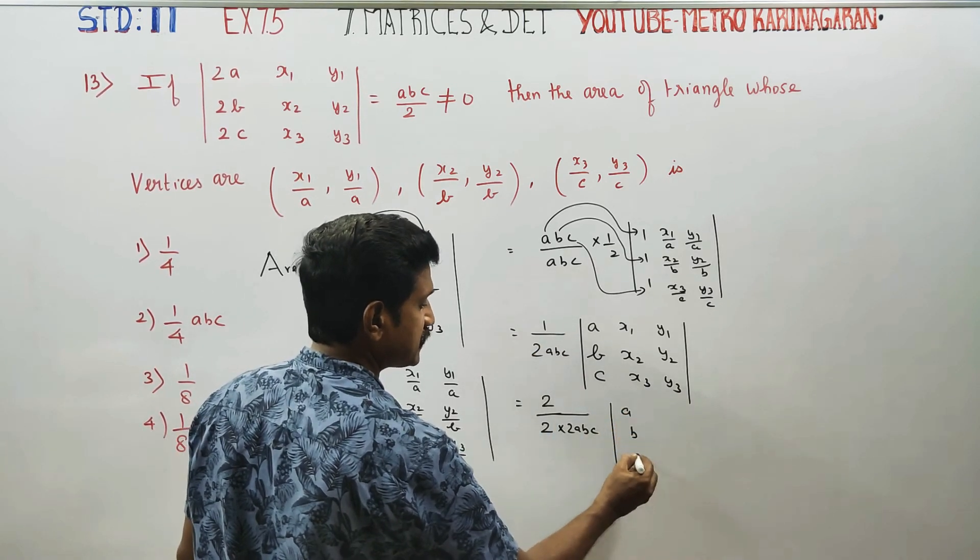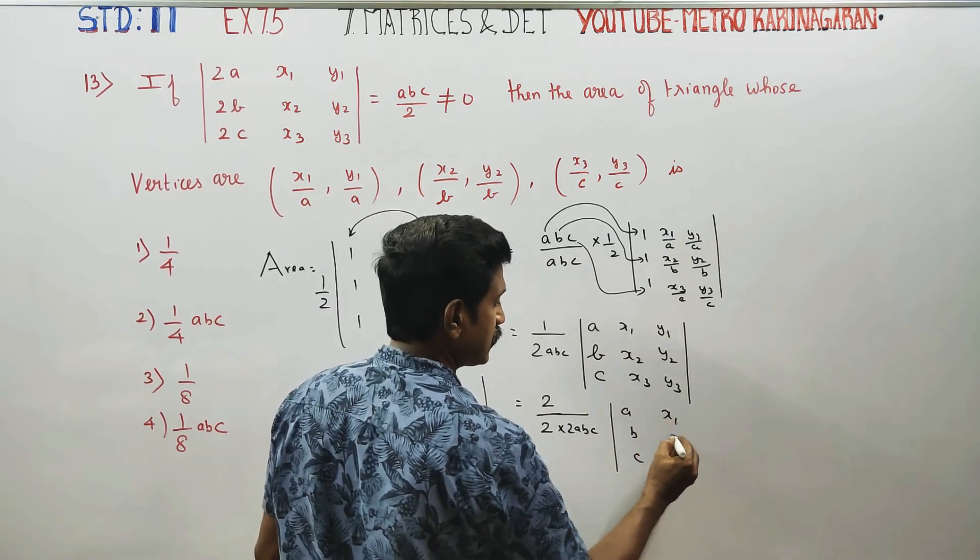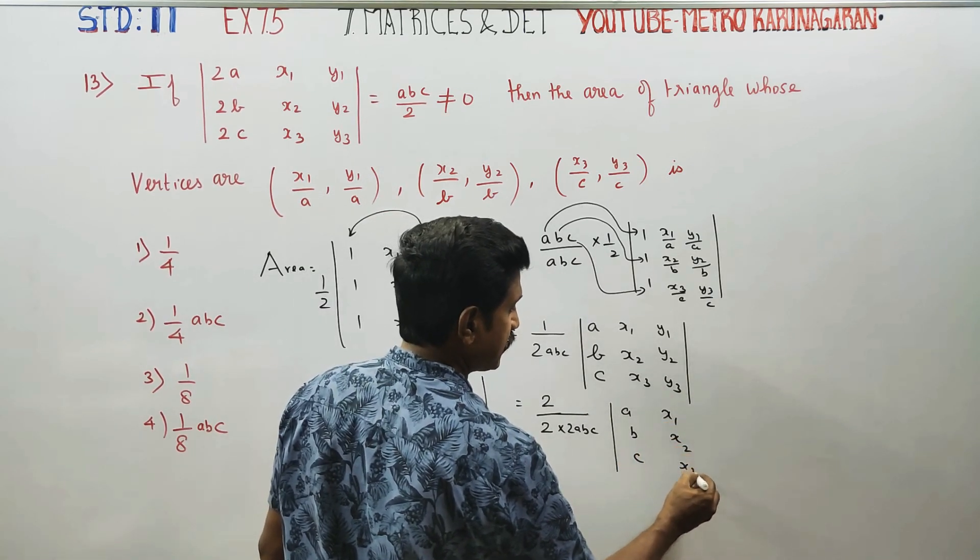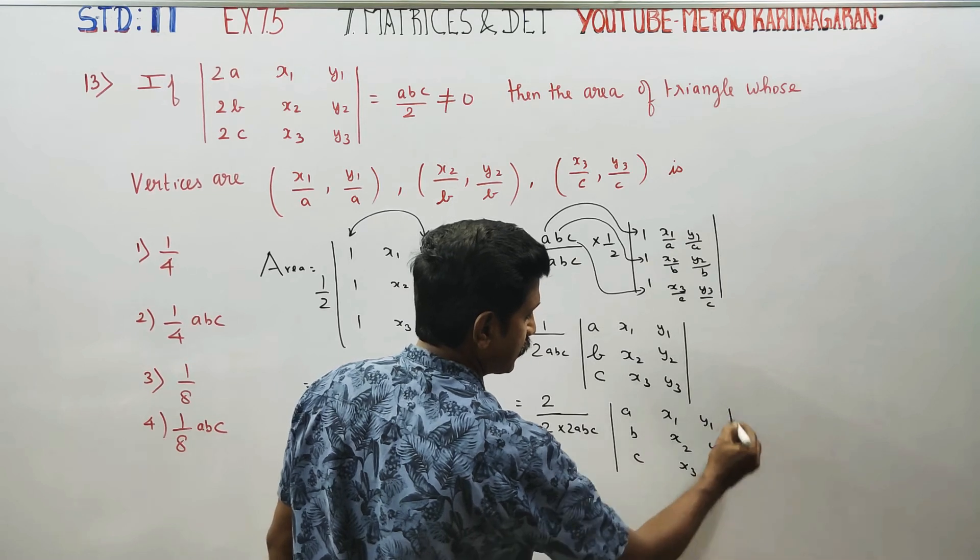We get A, B, C with the matrix containing X1, X2, X3, Y1, Y2, Y3. The factor of 2 multiplies through.